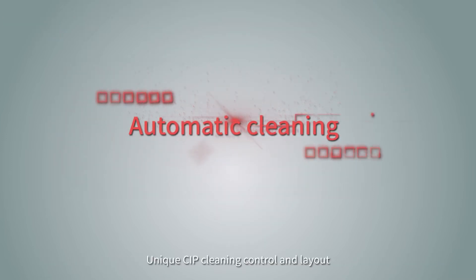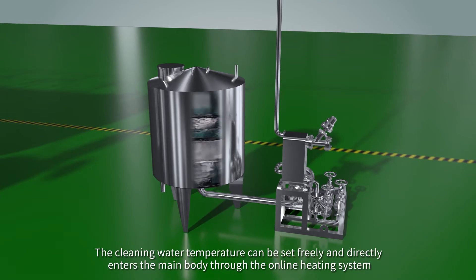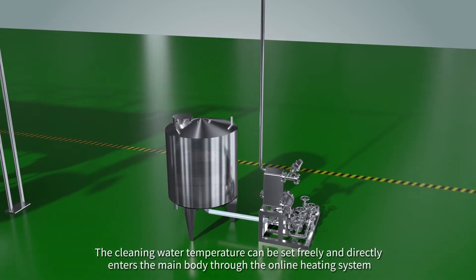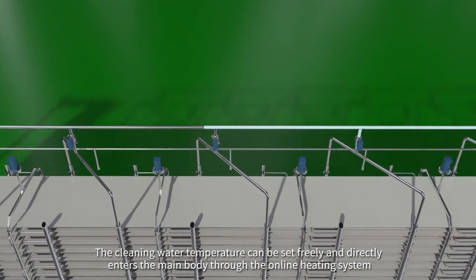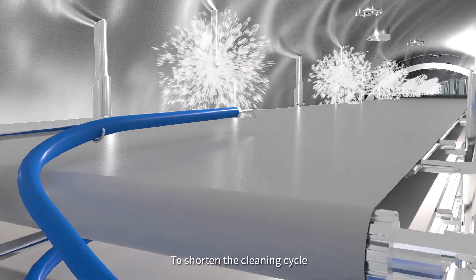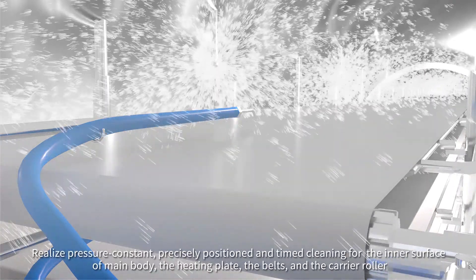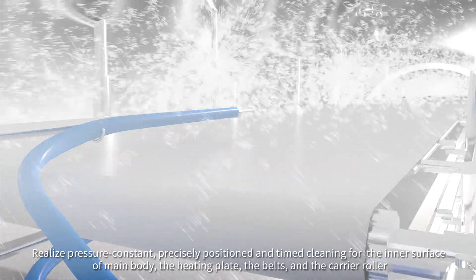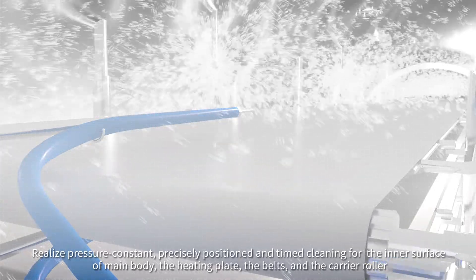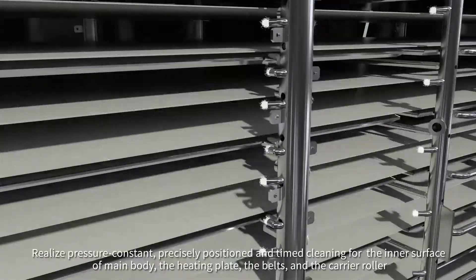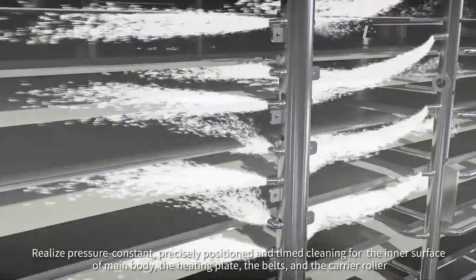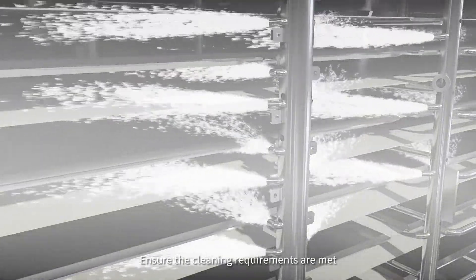Unique CIP cleaning control and layout. The cleaning water temperature can be set freely and directly enters the main body through the online heating system to shorten the cleaning cycle. Realize pressure constant, precisely positioned and timed cleaning for the inner surface of the main body, the heating plate, the belts and the carrier roller. Ensure the cleaning requirements are met.